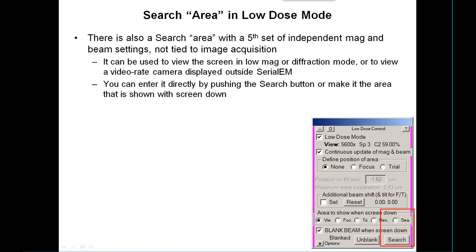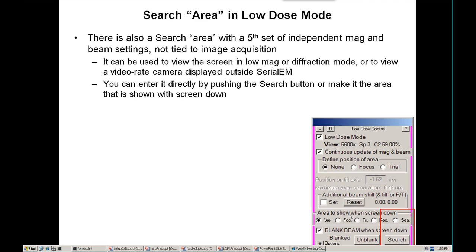There's also a thing called the search area, which has another set of independent magnification and beam settings but is not tied to an image acquisition. It can be used if you want to look at the screen in either a standard low-mag or diffraction mode, or if you have a video-rate camera displayed outside of SerialEM. You can either enter it directly by pushing the search button or make it active by making it the area shown when the screen is down.